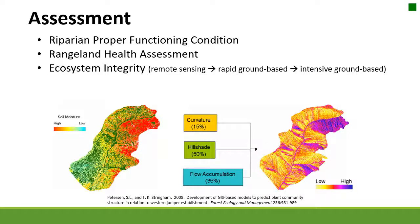The last assessment I'll mention is ecosystem integrity. This assessment looks at plant associations and ecological systems. One unique thing about it is that it's conducted on multiple spatial scales. You can have remote sensing data at level one, which gives you a landscape perspective. Then level two is a rapid ground-based assessment, and level three is an intensive ground-based assessment — giving you multiple spatial scales to better understand your information.